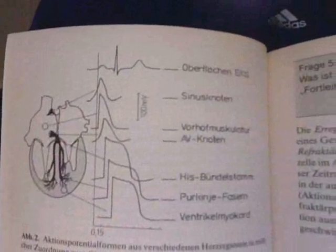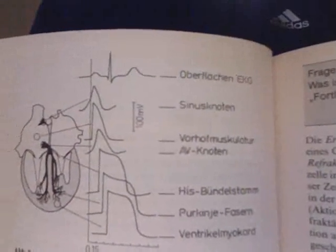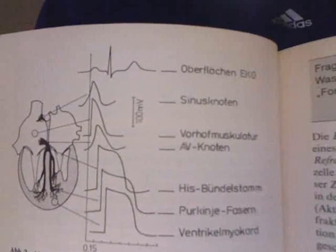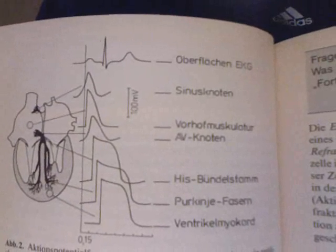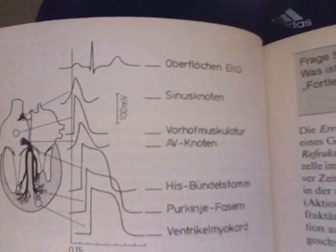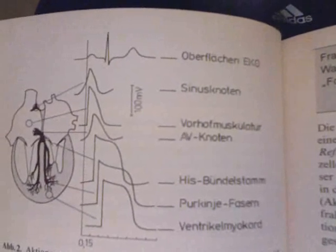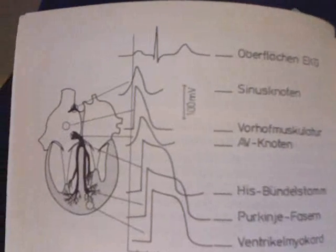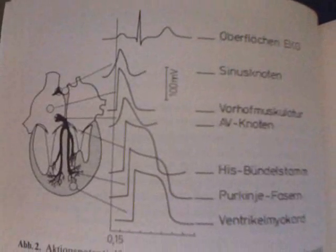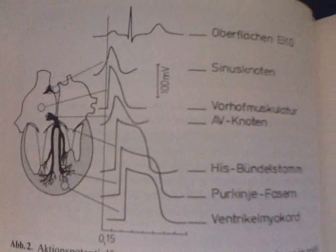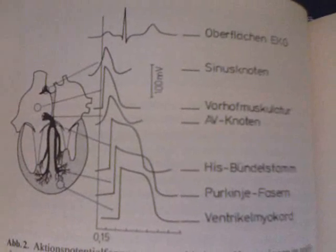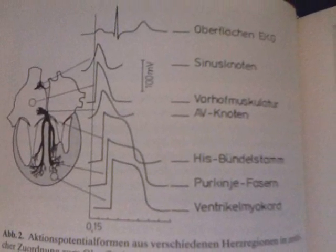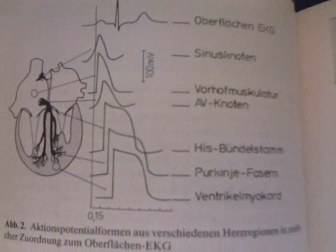If we follow down from the Oberfläche EKG — our German lesson for the surface EKG — down to the SA node, or the Sinusknoten, then the atrial musculature, the AV node or the Atrioventrikularknoten, and you can follow over to the heart and see exactly where those are. And then we come down to the Hisbündelstamm, that is the His-Purkinje system, and below that are the Purkinje-Fasern, or the Purkinje fibers.